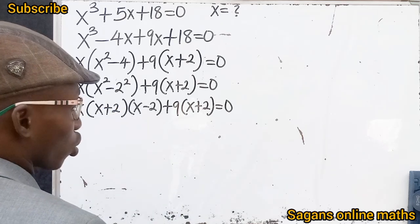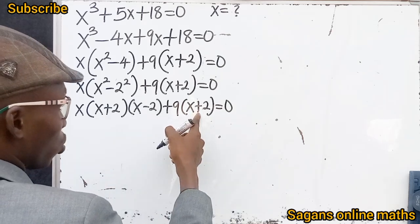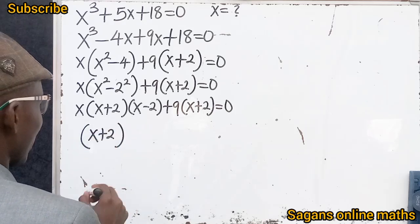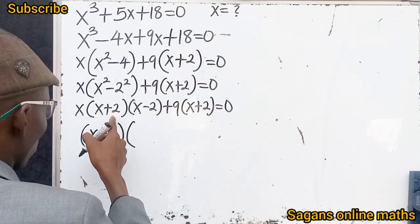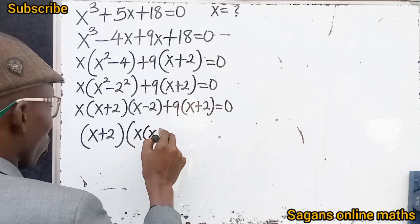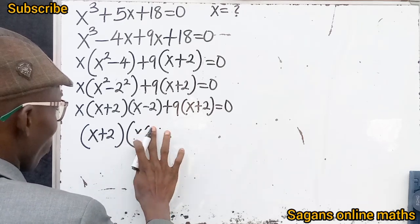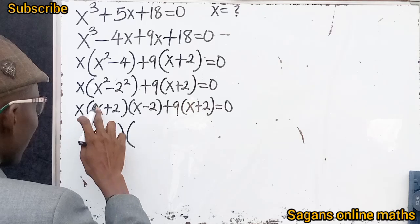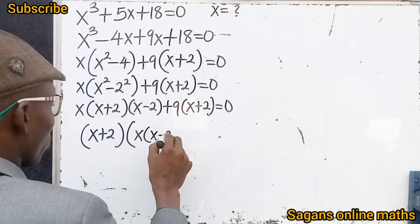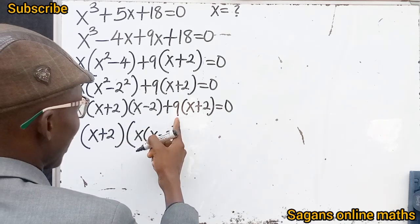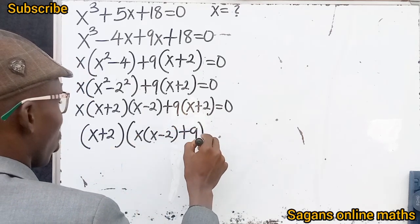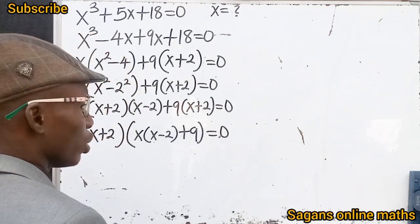Now let's look at this question very clearly. We can see that something is common — we have (x plus 2) here and also (x plus 2) there, so (x plus 2) is common. We bring out (x plus 2). Then x(x plus 2)(x minus 2) divided by (x plus 2) leaves us with x(x minus 2), and 9(x plus 2) divided by (x plus 2) leaves us with 9. So we have (x plus 2) times (x² minus 2x plus 9) equals zero.